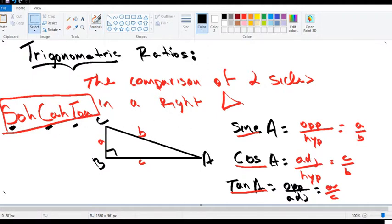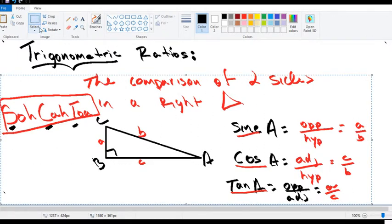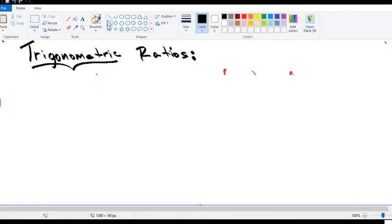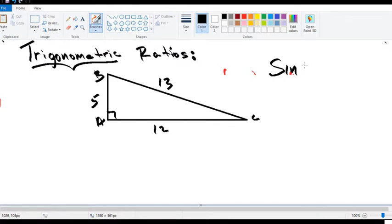So now let's consider an example where we find the three trig ratios. Let's call this triangle A, B, C. And let's make this 13, 12, and let's make this 5. I need to find the sine of B, cosine of B, and tangent of B.